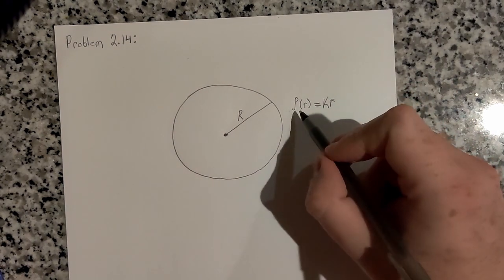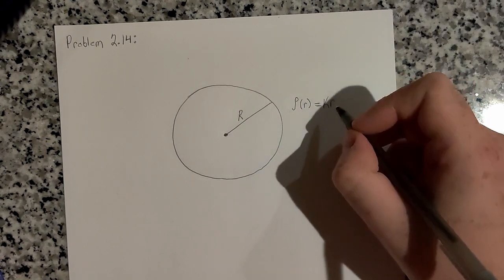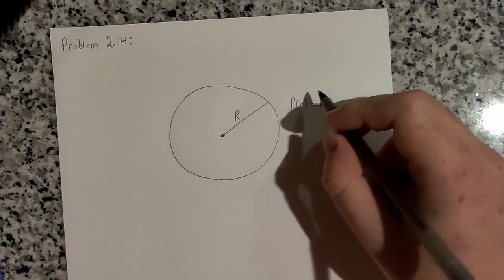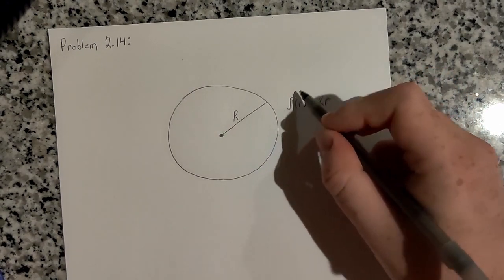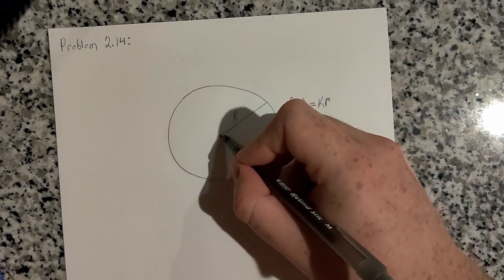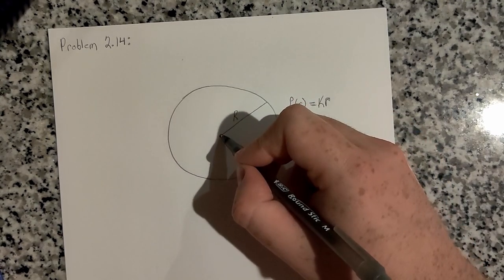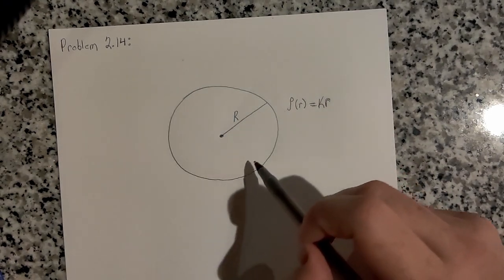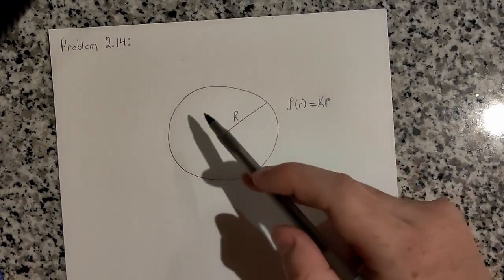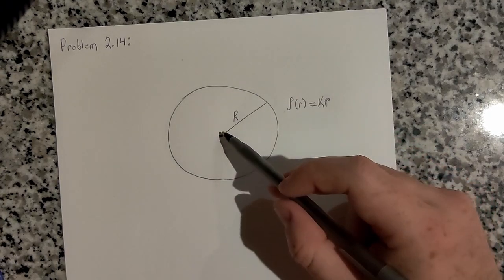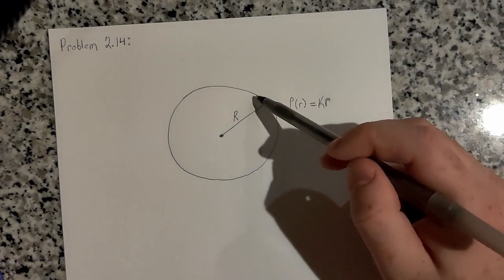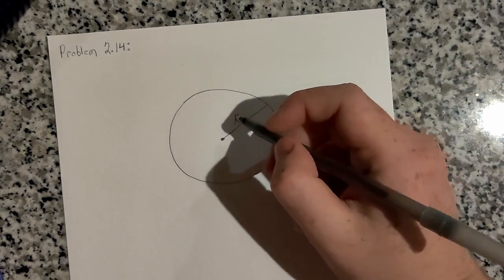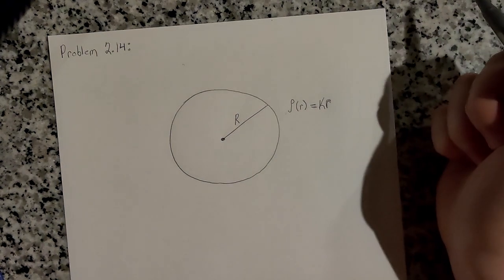If you think about this, since the charge density is proportional to the radius r, that means as the radius r increases, so does the charge density. So essentially, as you get further and further away from the center of the sphere, you get more and more charge accumulated in that volume element. So there's more charge on the outer part of the sphere than there is closer to the center. It's not uniformly smeared as usual.